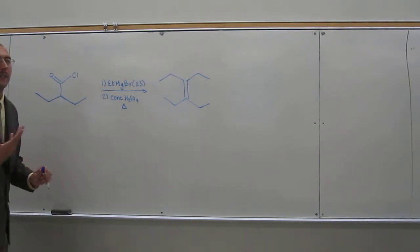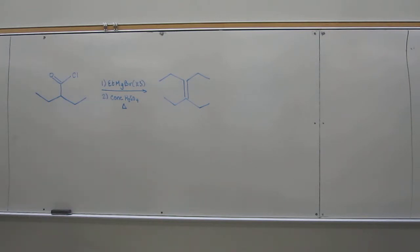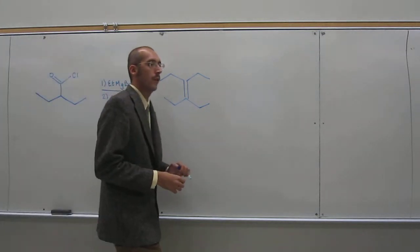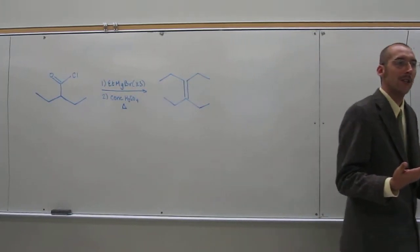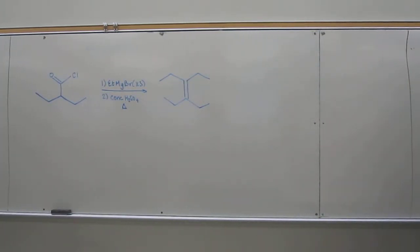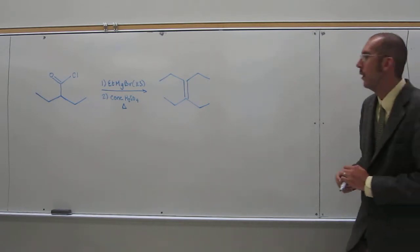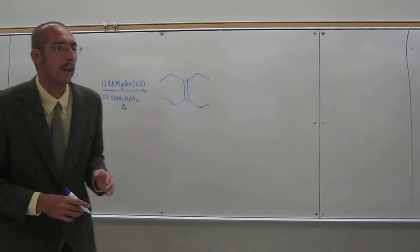that's going to protonate that alkoxide, and then that resulting alcohol will get protonated. And then, like Rene said, you can do an E1 or an E2 reaction in this case. Probably you're going to do the E1, because you're going to get that tertiary carbocation that's very stable. But you can imagine either one of them going.